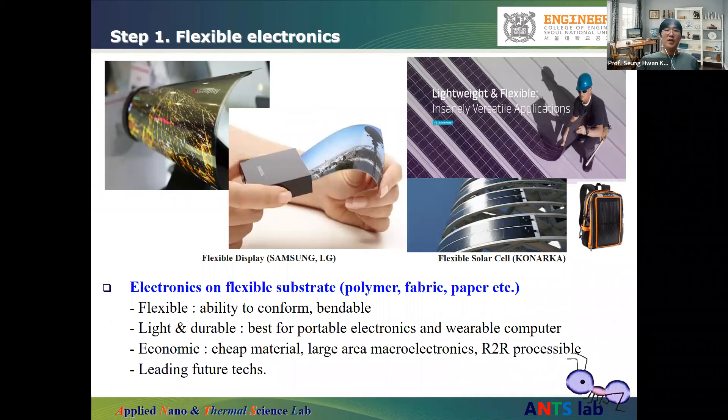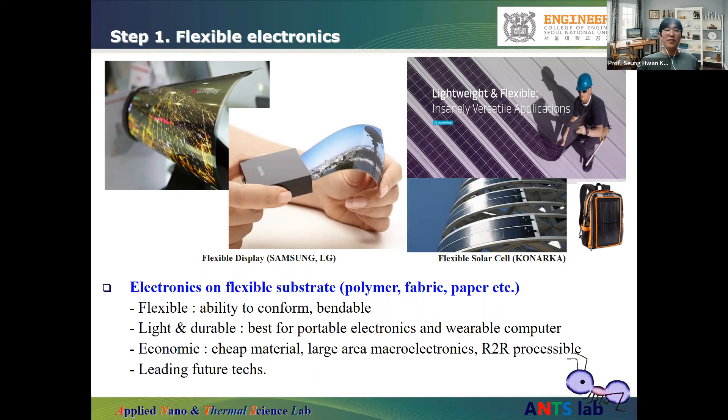Flexible electronics are built on flexible substrates such as plastic, fabric, or paper. They can be bent and easily conformed to non-flat surfaces. From these materials, they will be lighter and more durable than conventional rigid electronics, making them ideal for portable electronics where light weight and durability are most important.